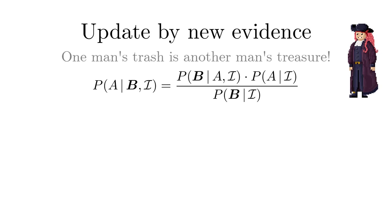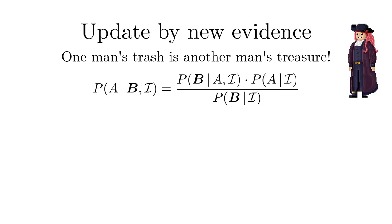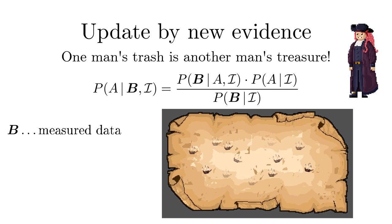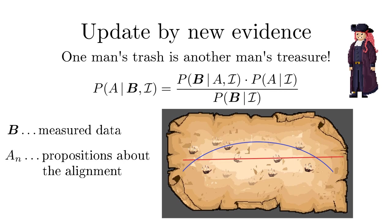So far the normalization was a mere nuisance but it actually has a deeper meaning. Suppose b encodes the measured data for instance the positions of Captain Bayes ship on the ocean measured at consecutive days and a sub n describes exclusive and complete propositions about how these positions are aligned. Say the positions are on a straight line, on a parabola or completely random. Then the probability for b is what is called the data evidence which is the probability to find the measured data if these assumptions are correct.